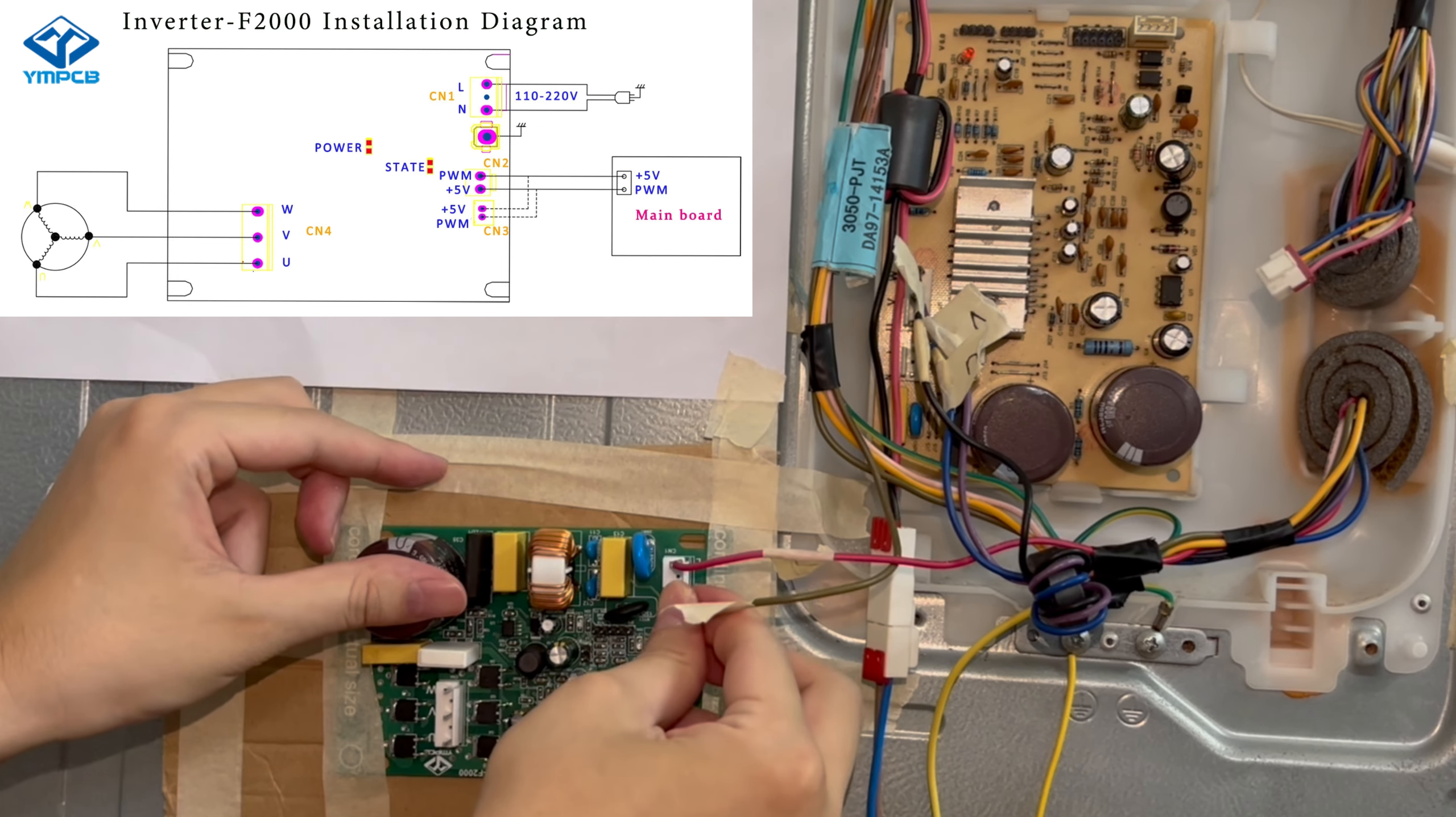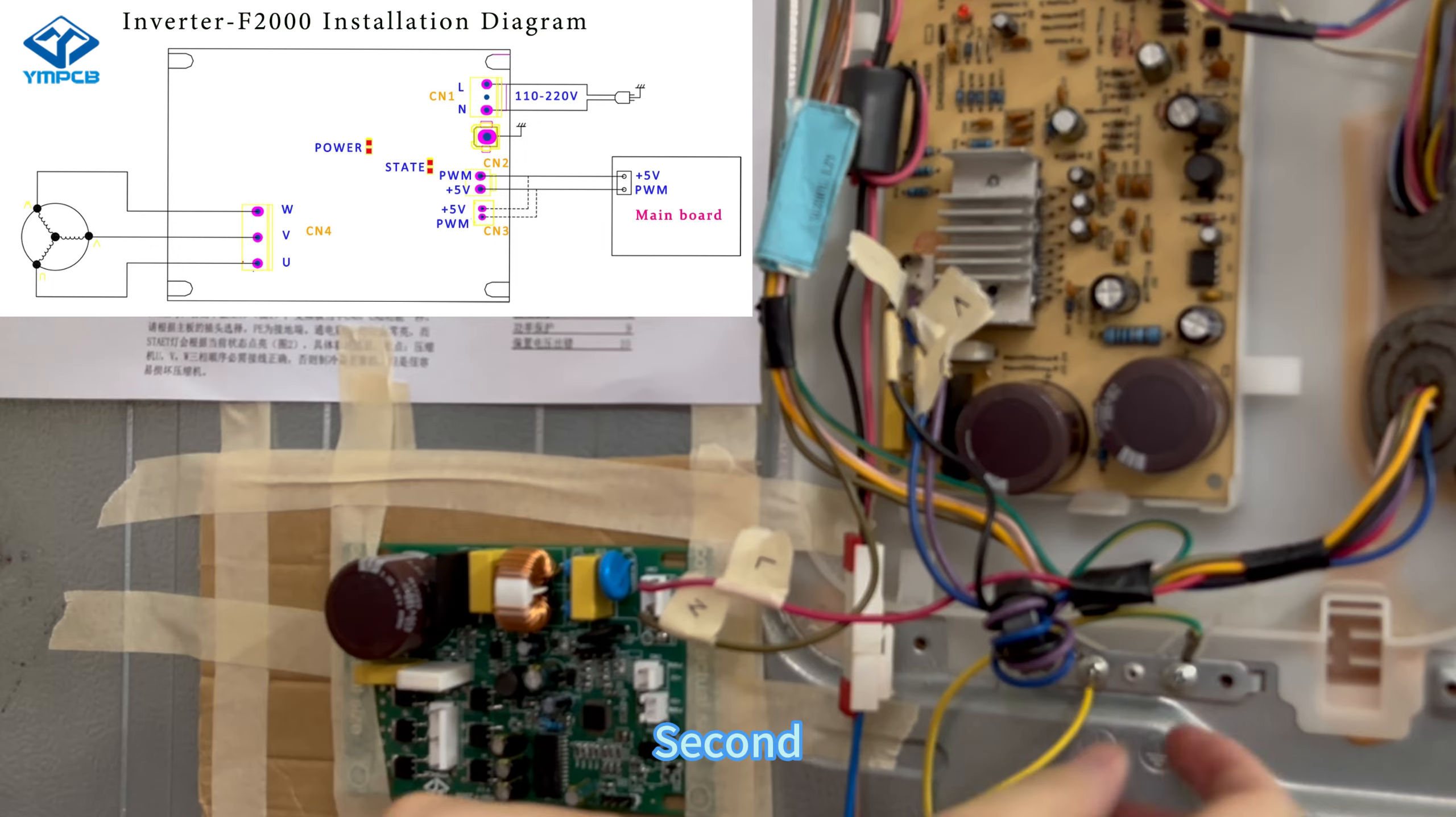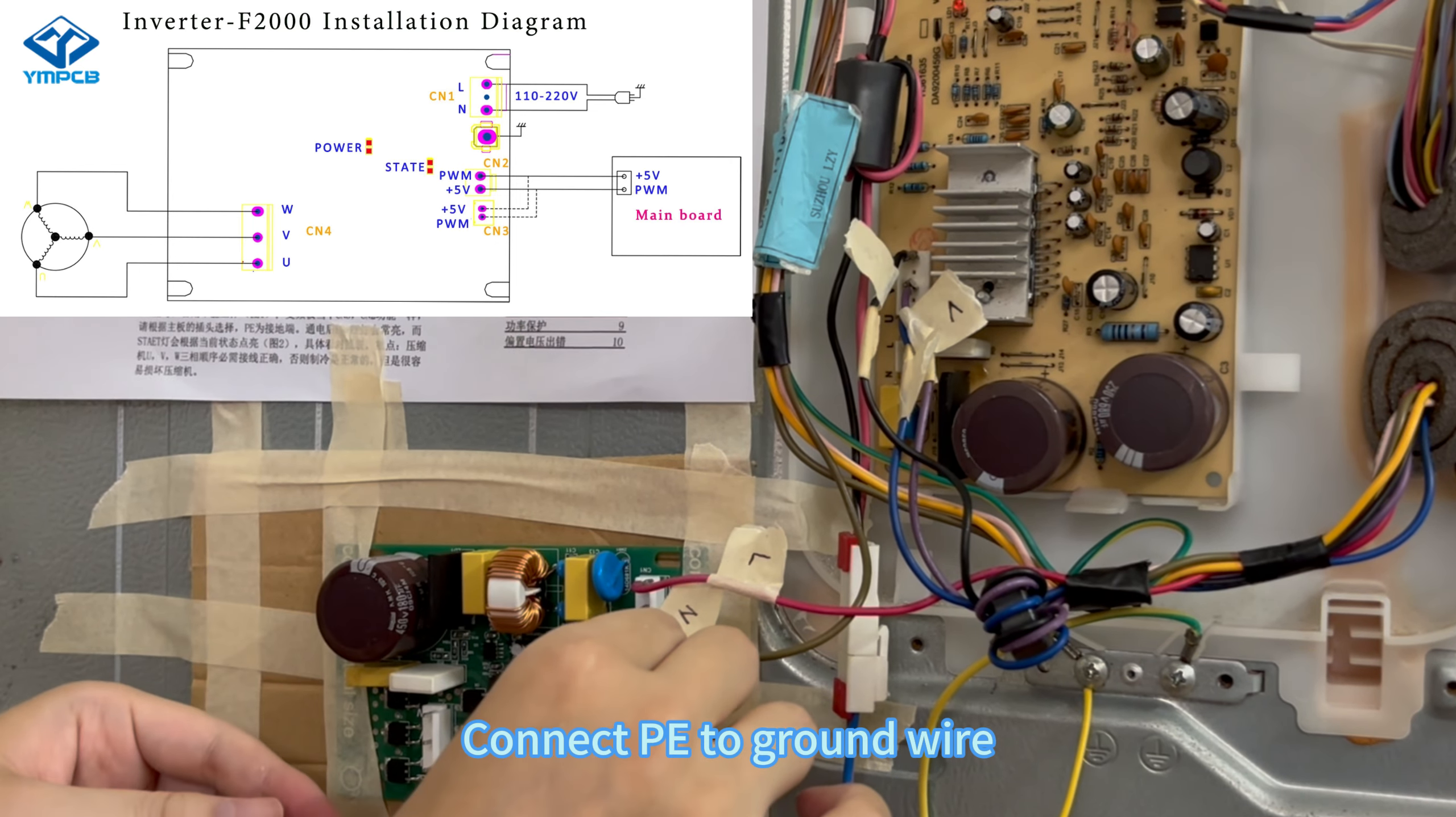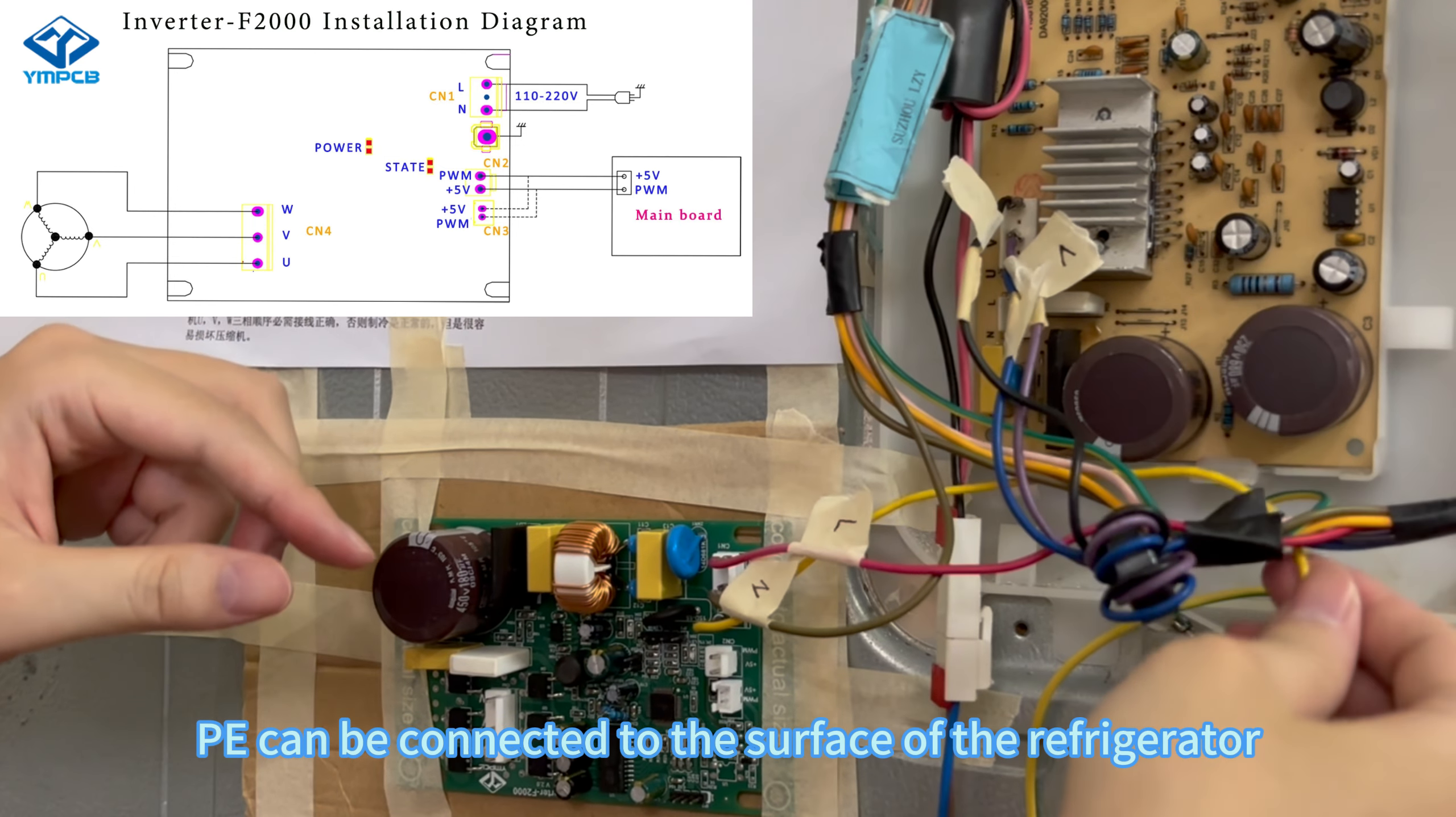First, connect the neutral wire and live wire in L. Second, connect PE to ground wire. PE can be connected to the surface of the refrigerator.